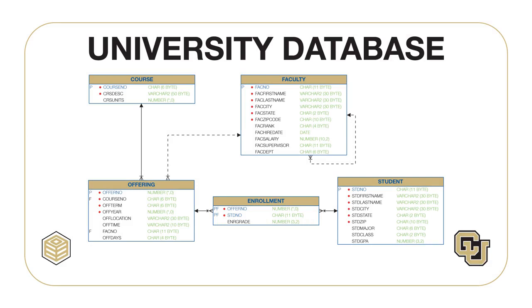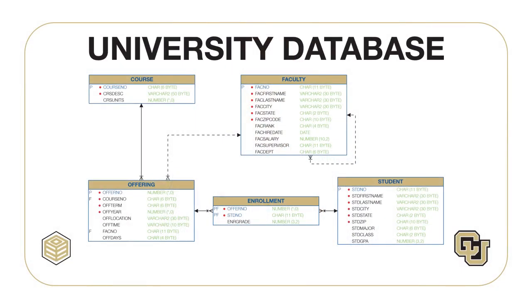You should be very familiar with the university database diagram from past lessons. The examples in this lesson involve three, four, and five tables connected by relationships. After identifying required tables for a problem, you should use the university database diagram to understand the connections. For example, to combine the course and student tables, you need to use the offering and enrollment tables, as the course and student tables are not directly connected.